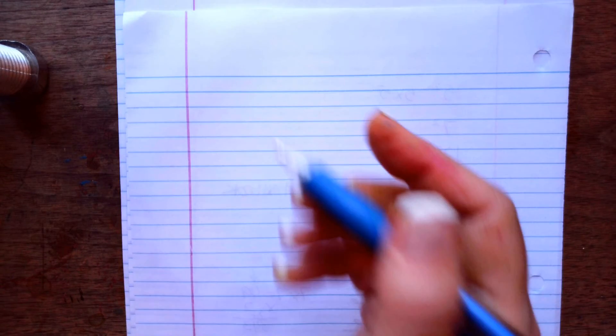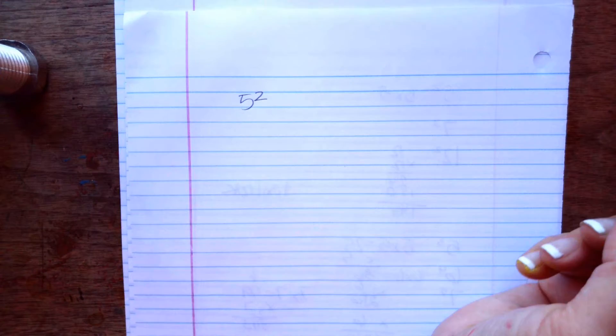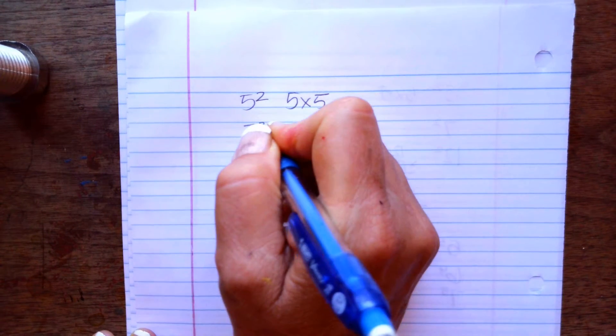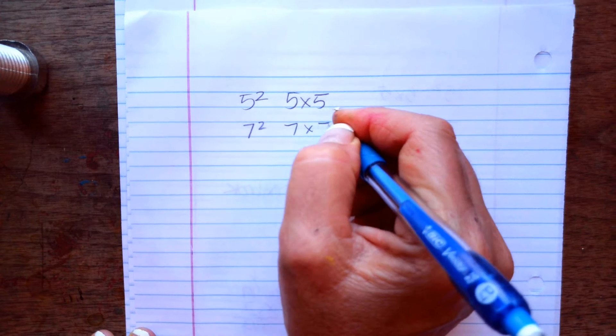Okay, so 5 squared is not 5 times 2. It means 5 times 5. 7 squared is not 7 times 2. It means 7 times 7.